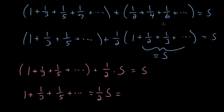And we already know that the sum of the even terms adds up to 1 half s. So we can conclude that the sum of these even terms has to be equal to the sum of the odd terms.